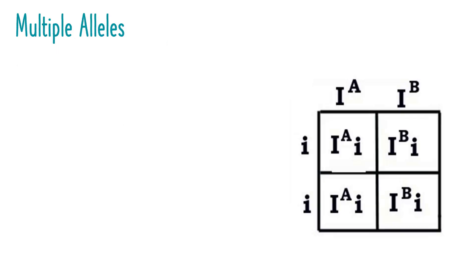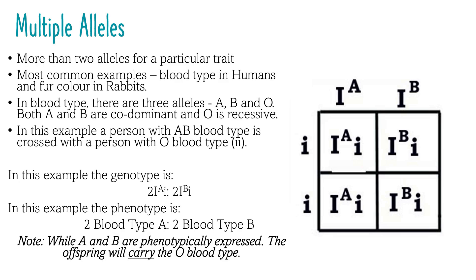Lastly, multiple alleles. As we have learned, alleles are the variations of genes. In the case of multiple alleles, there are more than two possible alleles for a particular trait. The most common examples are fur colour in rabbits and blood type in humans. In human blood type, there are three possible alleles: A, B and O. Both A and B are codominant and can be expressed equally as AB blood type. O blood type is recessive. When constructing Punnett squares for multiple alleles, we use the letter I. A superscript A and B are used to denote these blood types, and a lowercase i represents blood type O.